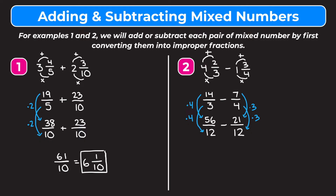And now we want to subtract the numerators. So 56 minus 21 is going to give us 35 on the top. Our denominator stays as 12. And finally we want to change this into a mixed number. So 12 goes into 35 twice, and 12 times 2 is 24, so we have 11 left over. So we get 2 and 11 twelfths as our answer.